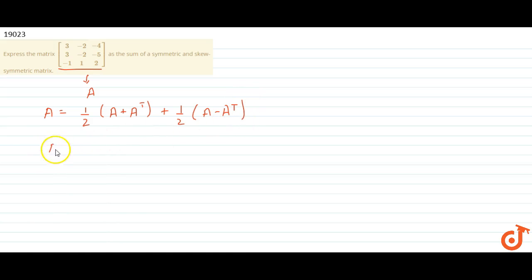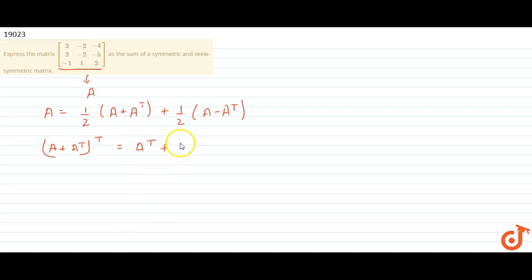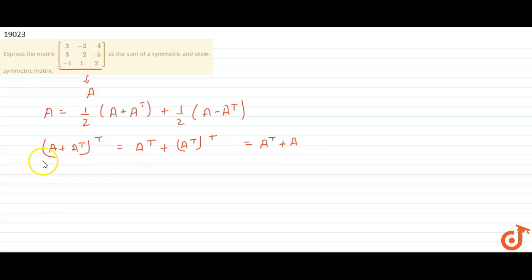Now consider (A + Aᵀ)ᵀ, which is equal to Aᵀ + (Aᵀ)ᵀ, which is equal to Aᵀ + A. So we have seen that A + Aᵀ is a symmetric matrix.